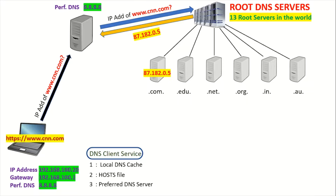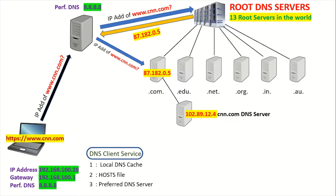The preferred DNS server then asks the .com DNS server: what is the IP address of cnn.com? Now the .com DNS server is also not an authoritative DNS server for cnn.com — it doesn't know the IP address of the web server named cnn.com. But it does know the IP address of cnn.com's own DNS server, which is 102.89.12.4.